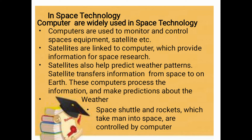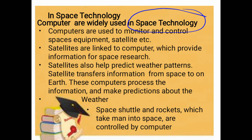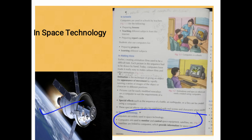Satellites transfer information from space to Earth - underline this. They also make predictions about the weather. Space shuttles and rockets which take man into space are controlled by computer. You must have read about rockets and seen documentaries - how people go into space, store food, take pictures there. Those rockets are controlled with the help of computers. All these things come under space technology and are controlled with the help of a computer.